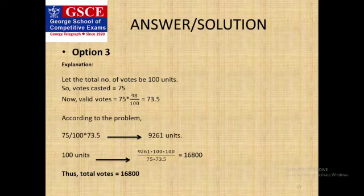Let's say the total number of voters be 100. Now, votes casted should be 75 percent of 100, that means 75, and invalid votes has been said to be 2 percent. So the valid vote should be 100 minus 2, 98 percent. So the calculation of the valid vote should be 98 percent of 75, which is 73.5.